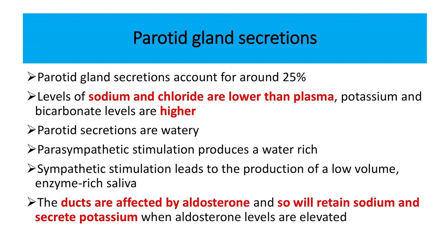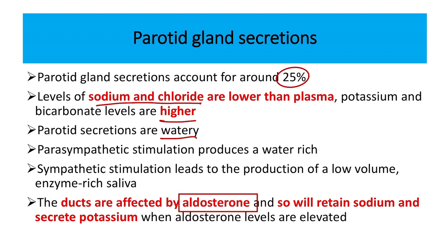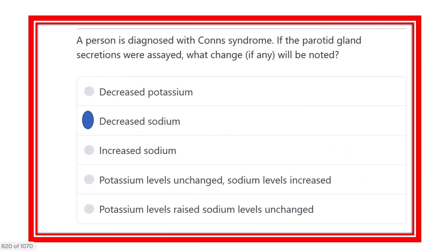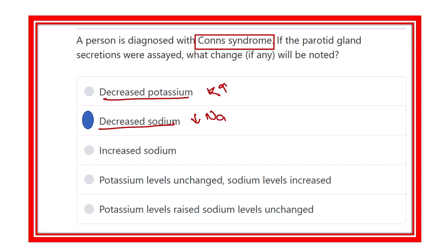The parotid gland secretes about 25% of total saliva, while most saliva — about 70-71% — is secreted by the submandibular gland. Sodium and chloride levels are lower than plasma; potassium and bicarbonate levels are higher. Its secretion is usually watery, and the ducts are affected by aldosterone — this is very important. So in Conn's syndrome, in the duct there will be a reduced level of sodium and an increased level of potassium. Both change because they are enemies — one increases as the other decreases. Thank you.